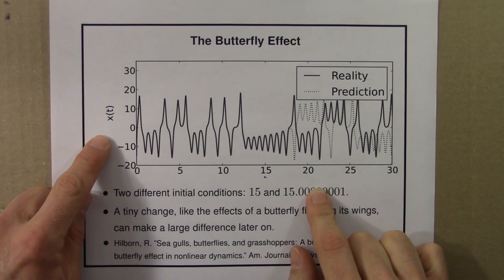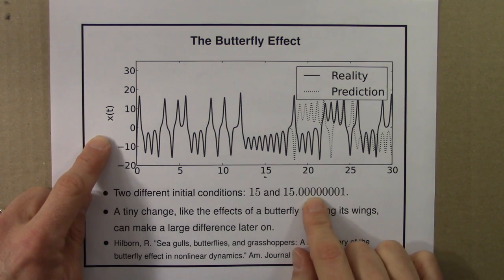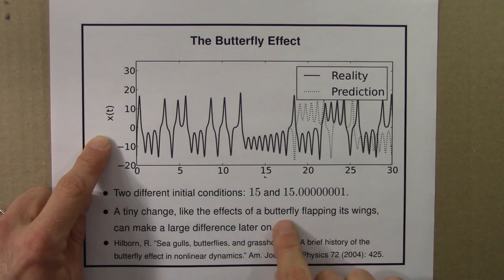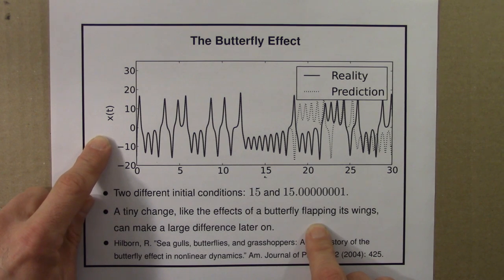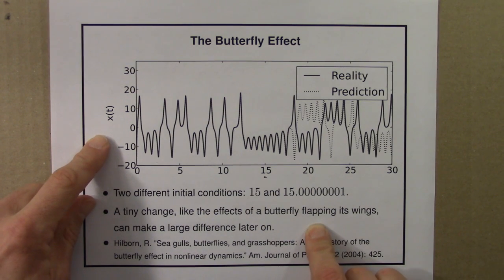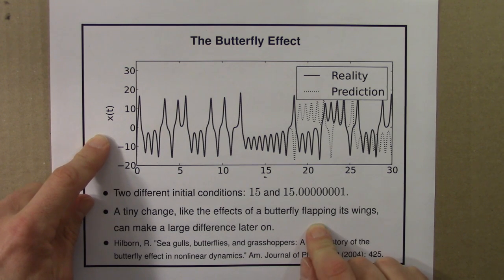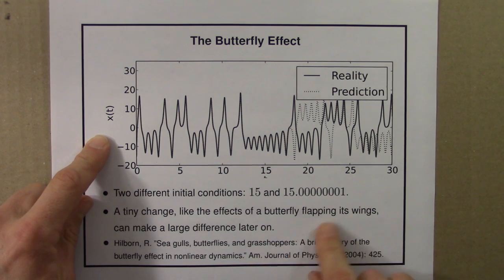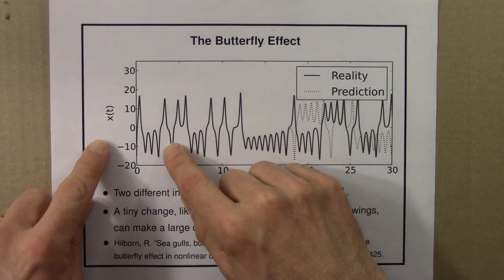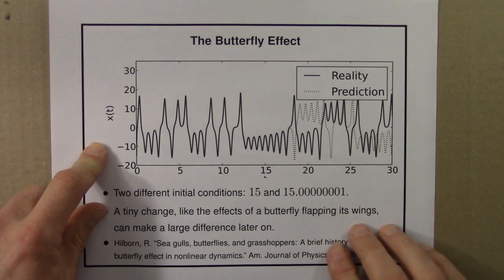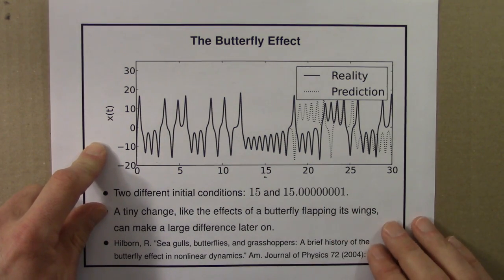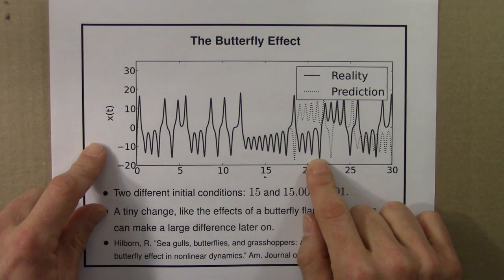James Gleick in his book Chaos has a nice way of thinking about the butterfly effect — in particular, the influence or the effect of a butterfly flapping its wings. He says the following: it's like giving an extra shuffle to a deck of already well-shuffled cards. You know that it will change your luck, but there's no way of knowing how it will change it. A butterfly might flap its wings, and we know it's going to change something in the future, but we don't know how it will change it.